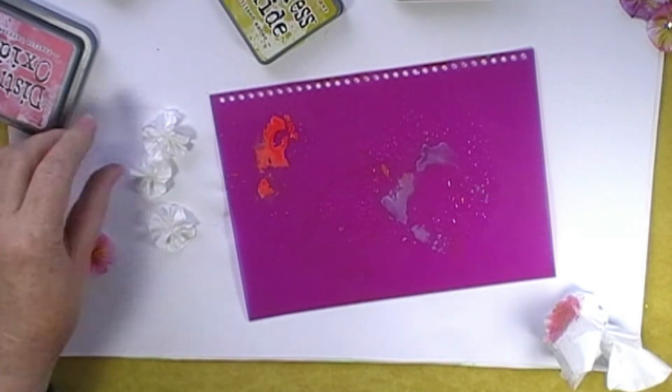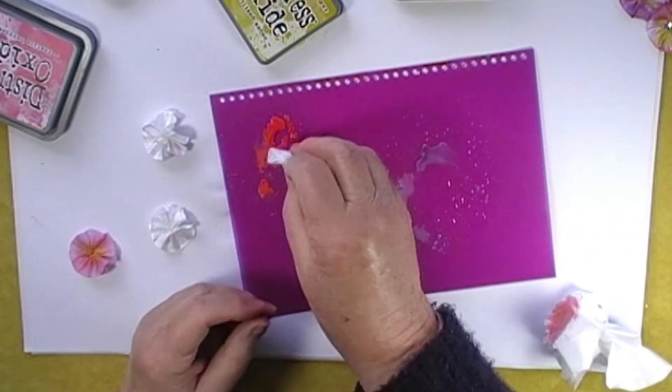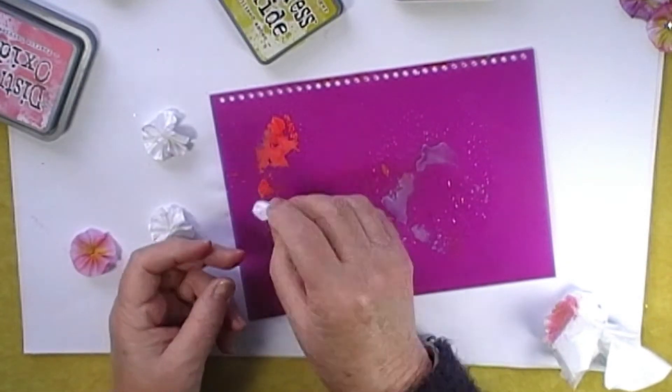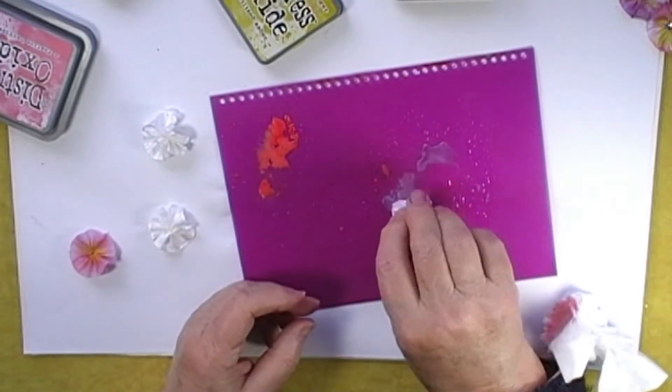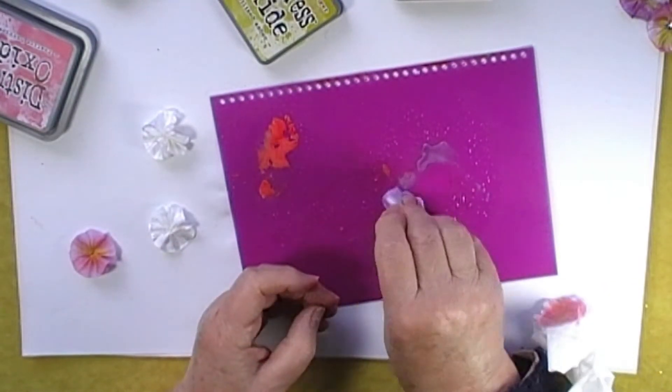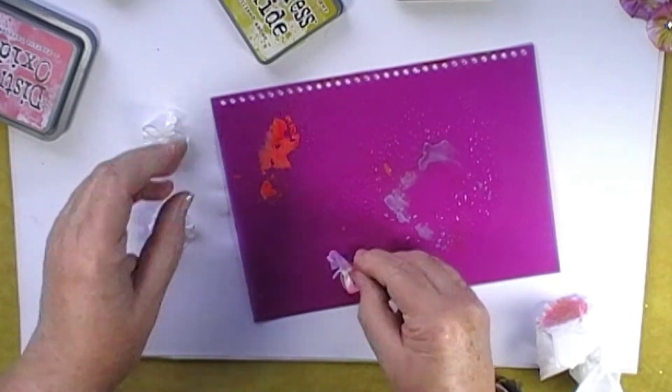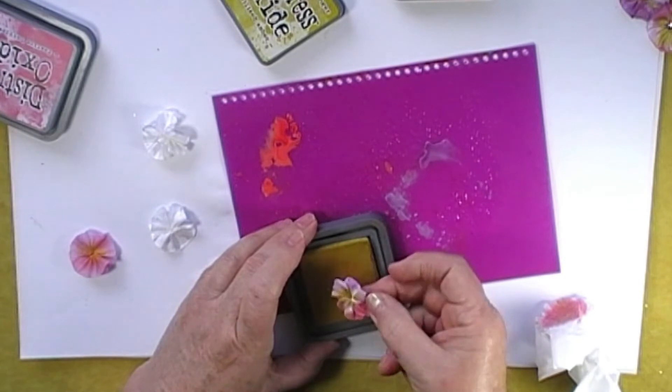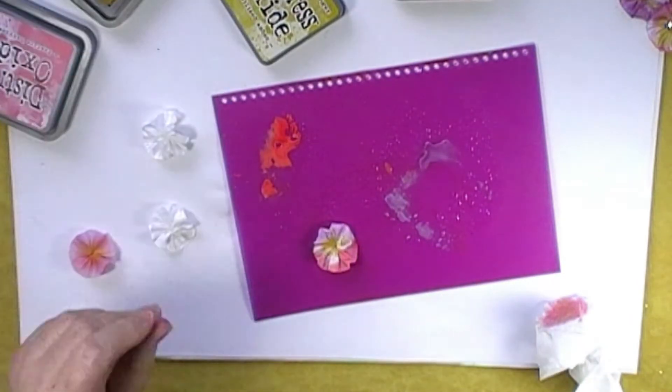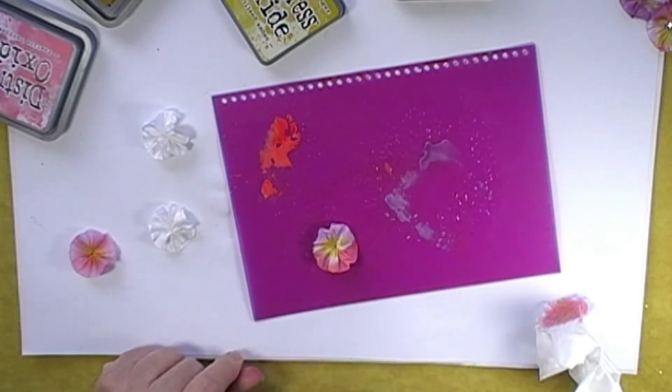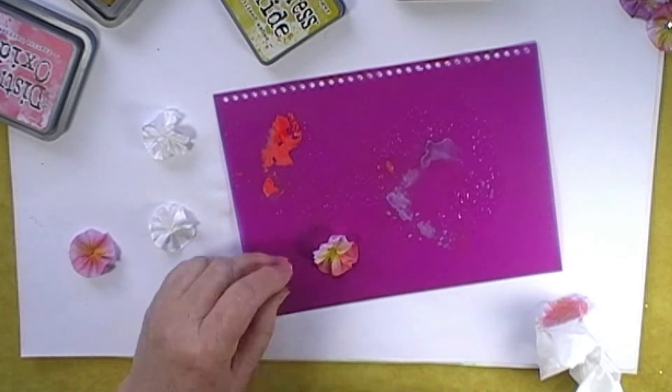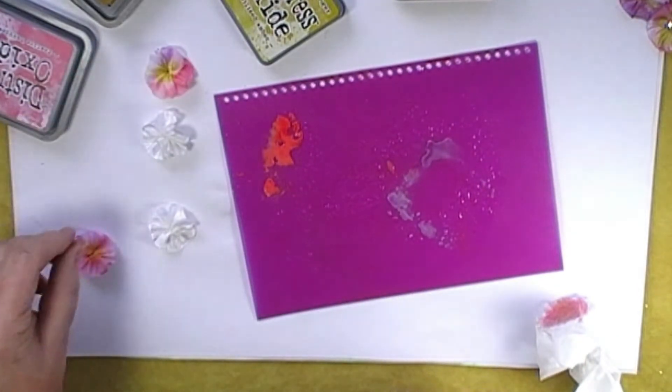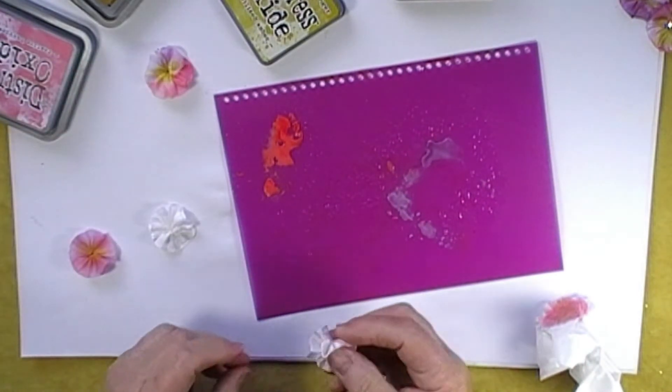We'll do another one. I'm going to do pink on one side and mauve on the other. Again, I like the yellow in the middle. Just give it a little spray. And then put them to dry. And that's basically all you do.